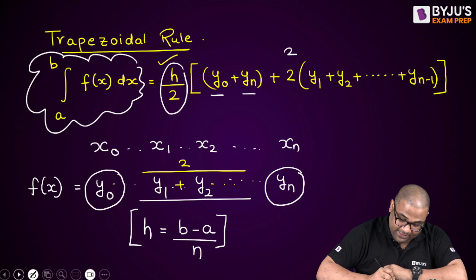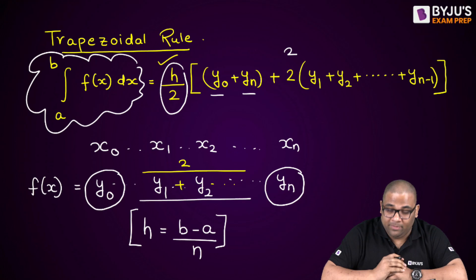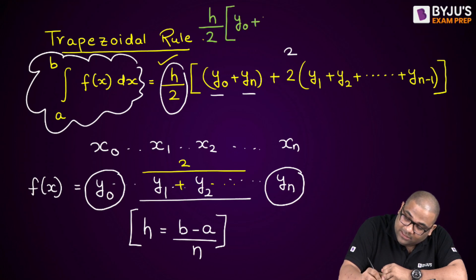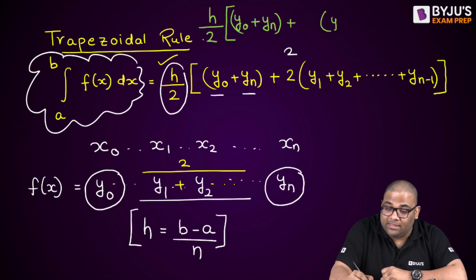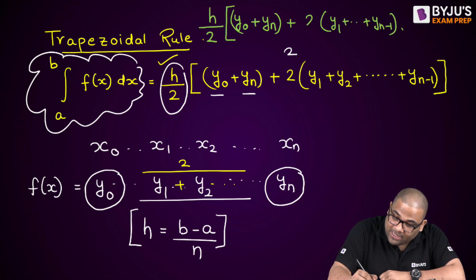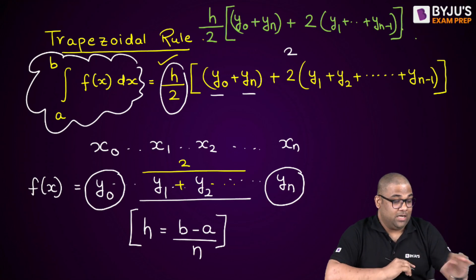To summarize the trapezoidal rule: first find h = (b−a)/n, since n, b, and a are given. Then apply h/2 × [y₀ + yₙ + 2×(y₁ to yₙ₋₁)]. Take y₀ plus yₙ, then sum all the other values y₁ to yₙ₋₁, multiply them by 2, and that gives the final answer.